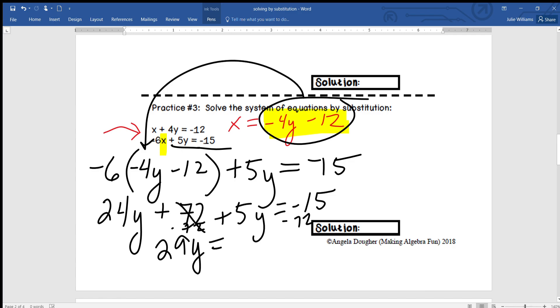So x is equal to negative 4y, because I subtracted the 4y on either side, subtract 12. So this is the expression equation that I'm plugging in for x in my other equation. So negative 6 times x, we know x is equal to this, so that's going to be plugged in here: negative 4y subtract 12, then we have plus 5y equals and then we have negative 15.